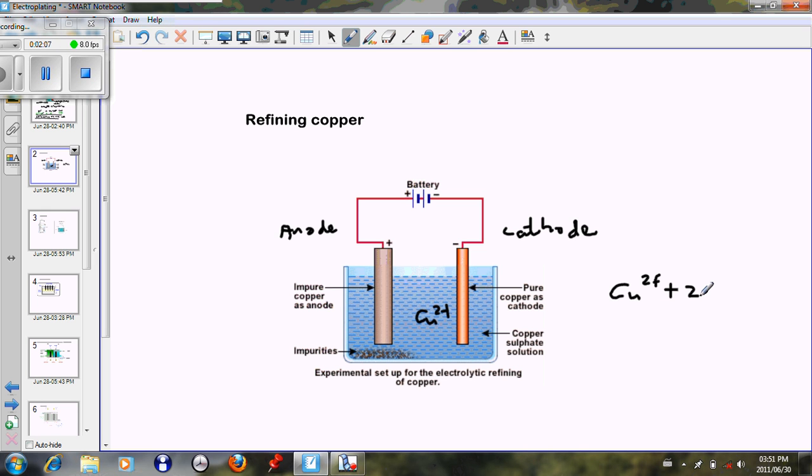These copper ions will gain electrons to form pure copper solid. Because it's gaining electrons—gain of electrons—another mnemonic which I didn't mention in the last lesson is reduction. So this is a reduction that takes place. In order to refine copper or any other metal, we place the impure copper at the anode and the pure copper at the cathode in order for the reaction to take place.